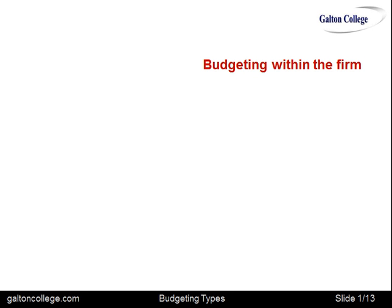This class is very straightforward. It wants to look at budgeting within the firm. In fact, all it's going to do is look at budget headings to see the various budgets that a firm may produce and to show how they are linked. So it's just really a flow diagram, a very straightforward class. We'd start with the sales budget.